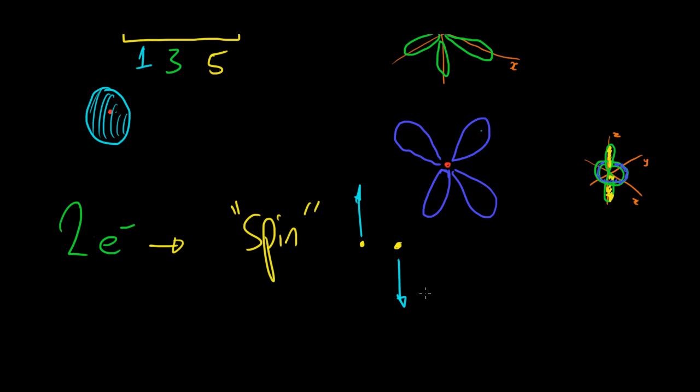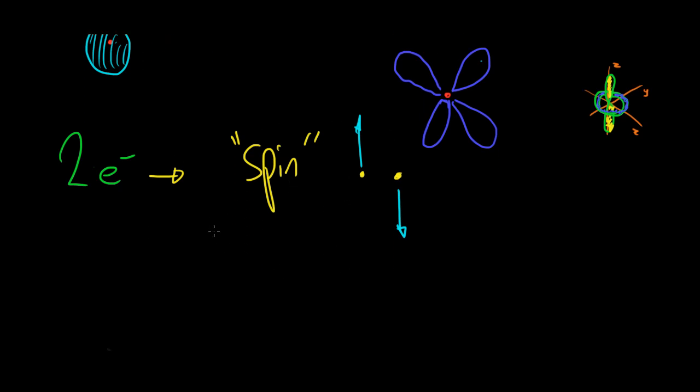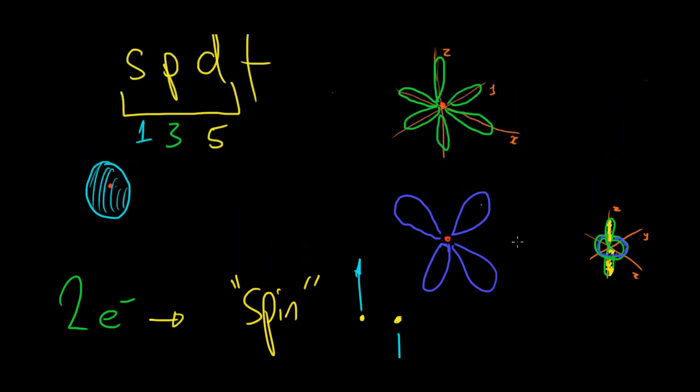So an electron can either be spin up or spin down. And they like to go around in pairs like this. With a spin up and a spin down. You'll never find two spin ups or two spin downs. It's always one spin up, one spin down.